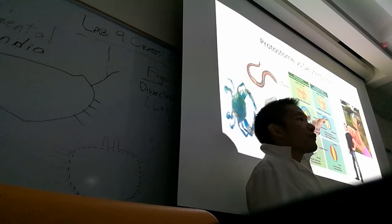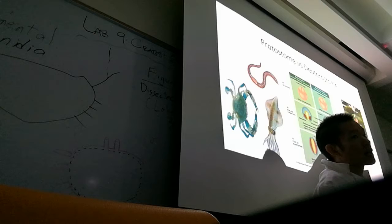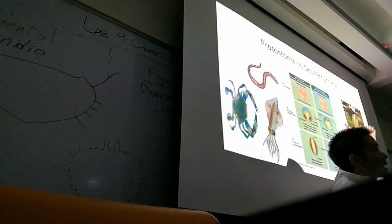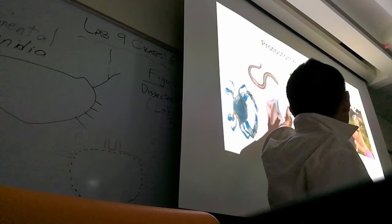In protostomes, the blastopore will go on to become the mouth. In deuterostomes, the blastopore will go on to become the anus. So animals like us - humans, sea stars, and pretty much all vertebrates - are deuterostomes. We